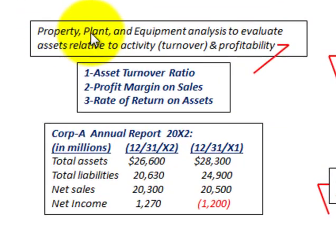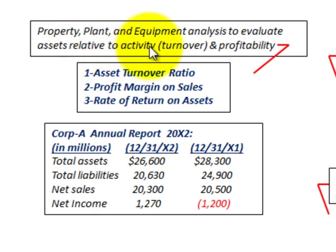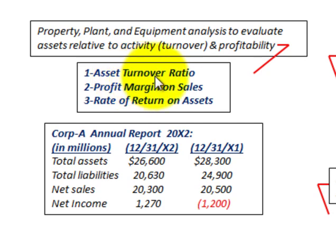What we're going to be looking at here is property, plant, and equipment analysis to evaluate the assets relative to their activity or their turnover, and their profitability. We're going to be looking at these three ratios: the asset turnover ratio, the profit margin on sales, and the rate of return on assets.